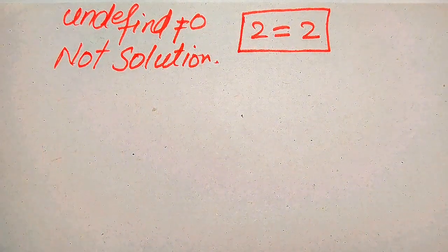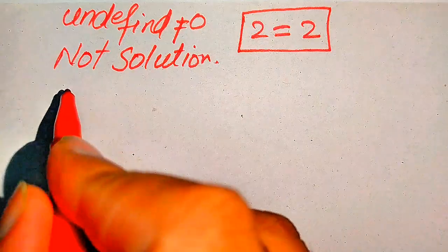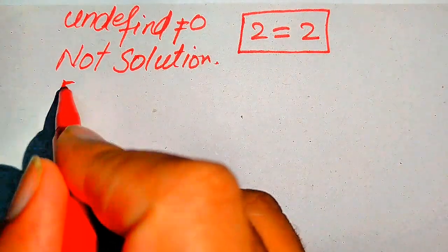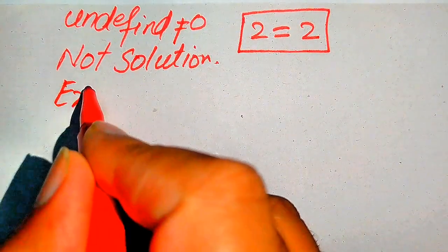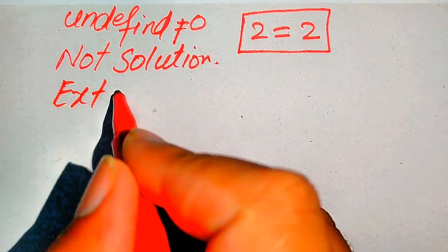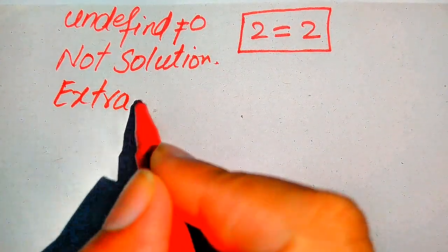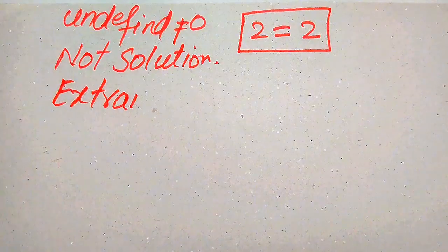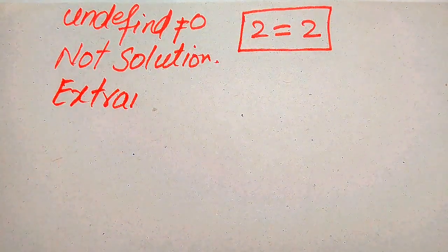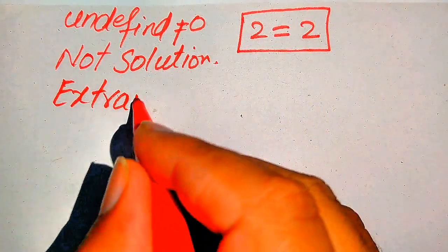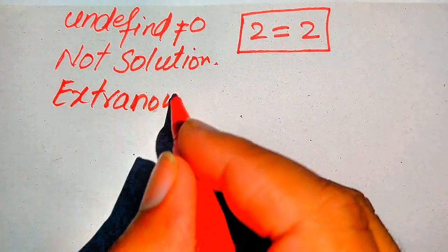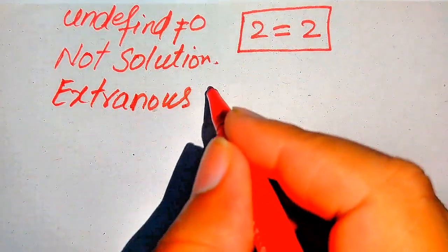So in the first method, x equals 2 is the only solution of the given equation. x equals 0 is not a solution — it is the extraneous root of the given equation.